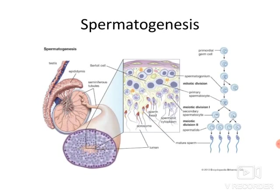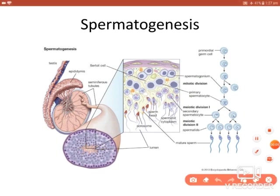Hello everyone. Here I will discuss about the fetal circulation. Before going to the fetal circulation, I will briefly cover spermatogenesis and oogenesis. Spermatogenesis is the formation of the male gametes in the testis.